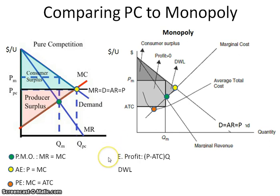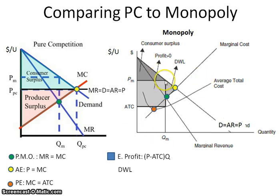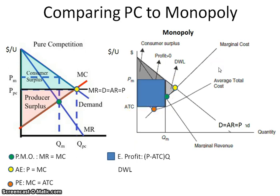When we look at economic profit, the formula for economic profit is price minus ATC times quantity. If you look over here at this monopoly graph, we can see that their price minus ATC times quantity is going to be this blue box here.